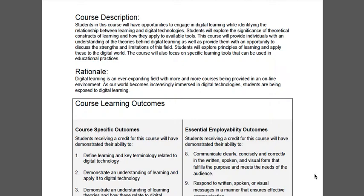This course outline can be found on DC Connect, so you can re-read it anytime you would like. The rationale for this course is that digital learning is an ever-expanding field, with more and more courses being provided in an online environment. As our world becomes increasingly immersed in digital technology, students are being exposed to digital learning. This course will provide you with an opportunity to see what different types of learning tools there are and how you can apply them to your own learning and future learning.